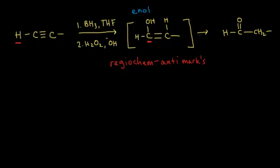Sometimes if you use borane in the first step, borane is so reactive that it's actually going to add two molecules across your triple bond, since the triple bond consists of two pi bonds. So sometimes you'll see a different molecule used — a dialkyl borane, R2BH. If you make them really bulky, this steric hindrance prevents the second addition of the borane, because in the mechanism you want only one addition. Check out the video on hydroboration oxidation of alkenes for much more detail of that first mechanism.